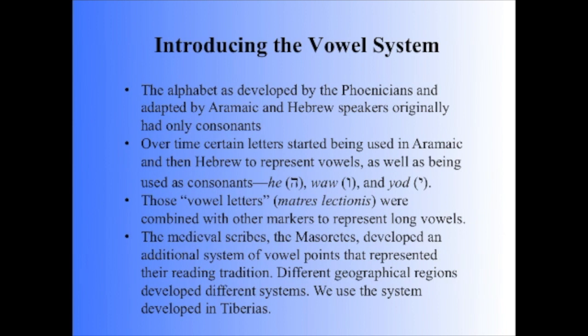These are the He, the Vav, and the Yod. These vowel letters, or Matris Lectionis, were then combined with other markers to represent long vowels by the Masoretes.